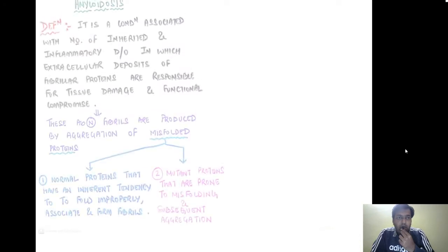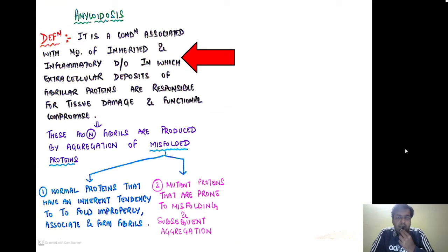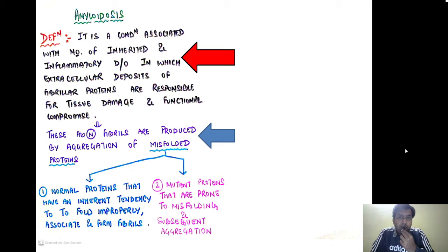Amyloidosis is a condition associated with a number of inherited and inflammatory disorders in which extracellular deposits of fibrillar proteins are responsible for tissue damage and functional compromise. These abnormal fibrils are produced by the aggregation of misfolded proteins — either normal proteins with an inherent tendency to fold improperly, or mutant proteins prone to misfolding and subsequent aggregation.